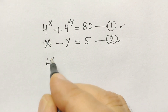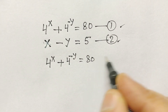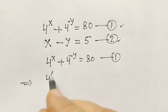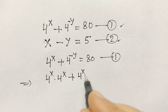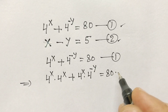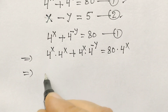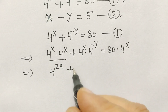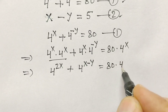Let's start. If we take equation first: 4 to the power x plus 4 to the power minus y is equal to 80. If we multiply the whole equation by 4 to the power x, we get 4 to the power x times 4 to the power x, plus 4 to the power x times 4 to the power minus y, is equal to 80 multiplied by 4 to the power x.